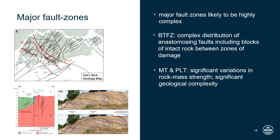Significant variation in rock mass strength should also be anticipated within and in close proximity to the Murai and Pasir Laba thrust zones, which have also generated significant geological complexity by stacking older strata over younger strata in multiple repeating packages. Correlating boreholes and predicting which lithology types are present laterally will therefore be significantly more challenging in these volumes. It's worth noting that the location of faults in Singapore is highly uncertain due to the difficulty in verifying the geology at surface. Mapped faults should therefore be considered an indicator of the likely presence of faulting effects rather than the definitive position of a discrete fault plane.